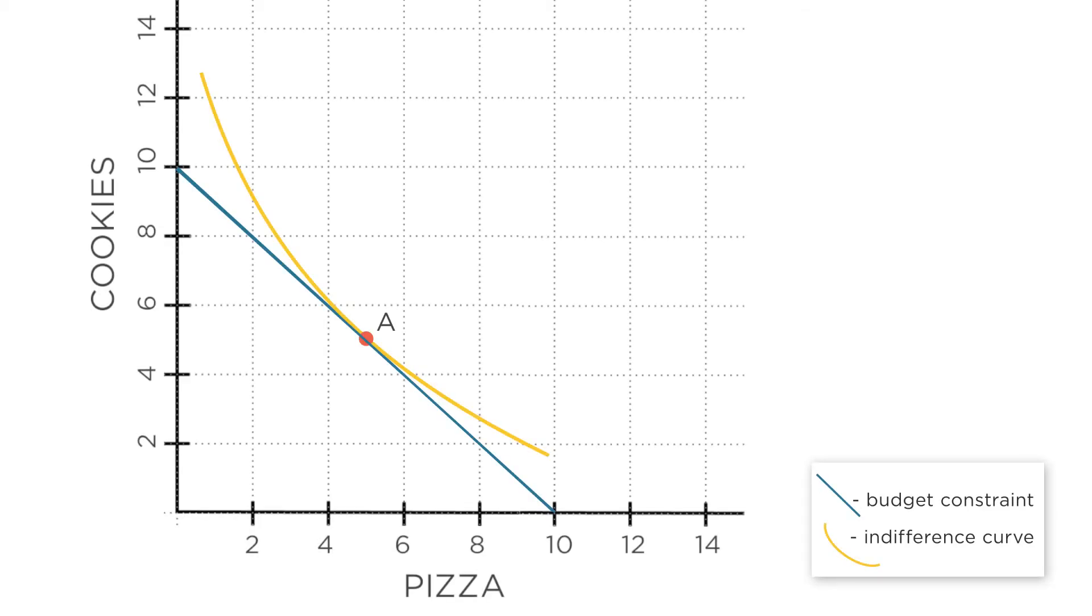Here's another graph like the one you just saw, but where pizza's an inferior good. The price of pizza rises, and you move from A and end up at C. But let's decompose the two effects again.